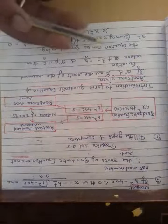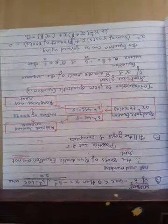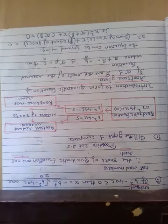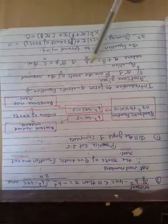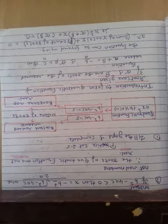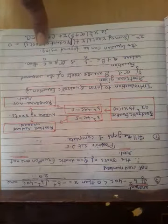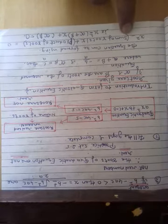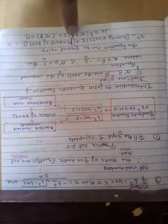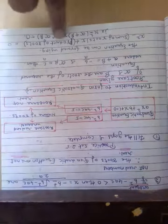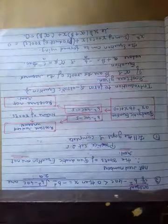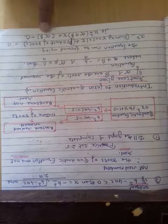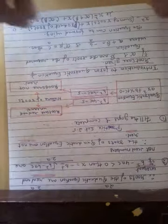Alpha + beta और alpha × beta यह आपको पहले से याद करके रखना पड़ेगा — practice set में आगे काम आएगा। ax² + bx + c = 0 में से minus b/a और c/a की values उठाकर लिखनी रहेंगी। Equation बनाने का formula है: x² - (sum of roots)x + (product of roots) = 0, यानी x² - (α+β)x + (α×β) = 0.